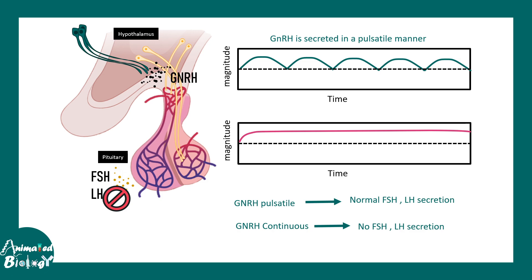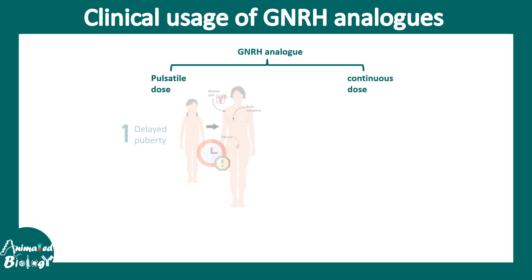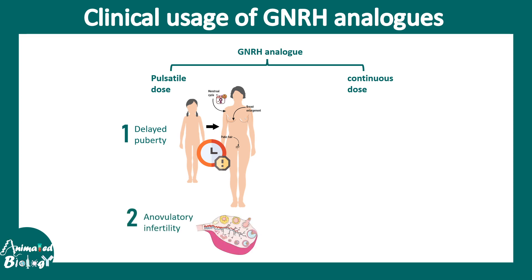These experimental results help doctors devise treatment strategies. GnRH analogues are used to treat many diseases. Pulsatile doses can help regain delayed puberty, since pulsatile GnRH triggers FSH and LH secretion to support pubertal transition. Also, in cases of anovulatory infertility where ovulation doesn't happen due to insufficient LH, giving a GnRH analogue can improve LH secretion.